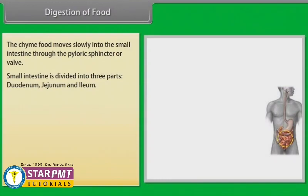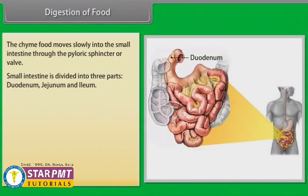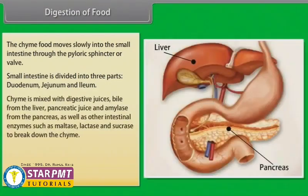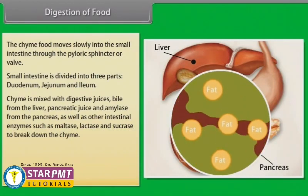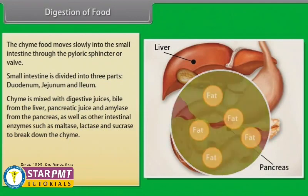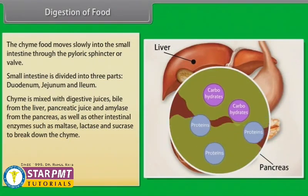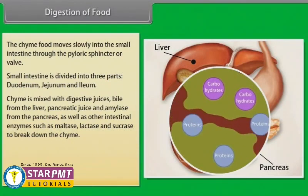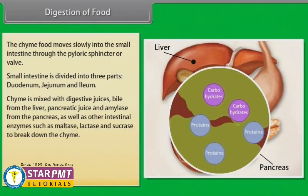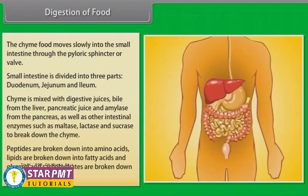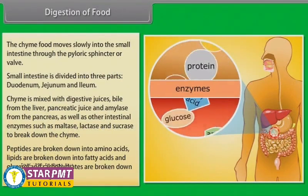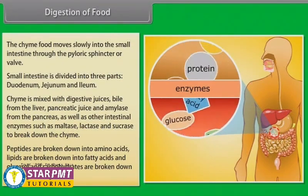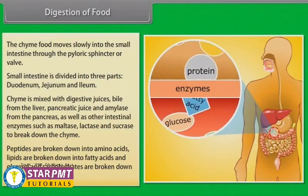The small intestine is divided into three parts: duodenum, jejunum, and ileum. Chyme is mixed with digestive juices — bile from the liver, pancreatic juice and amylase from the pancreas, and other intestinal enzymes such as maltase, lactase, and sucrase. Peptides are broken down into amino acids, lipids into fatty acids and glycerol, and carbohydrates into sugars and glucose.